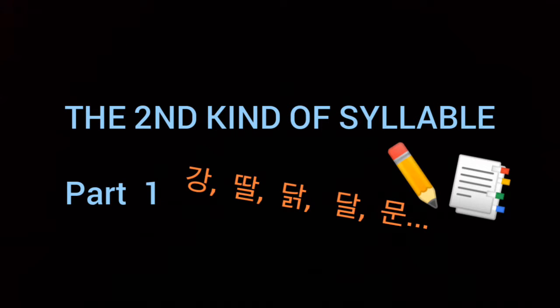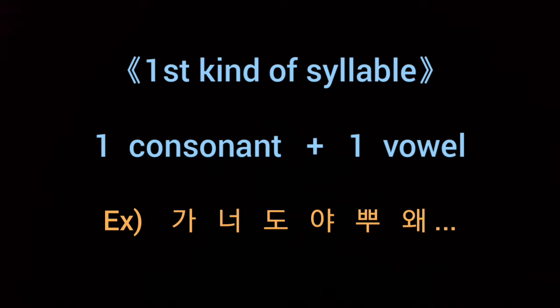Hello, I'm Alex. Today, we're gonna talk about the second kind of syllable. As I said before, there are two kinds of syllables in Korean. The first one consists of one consonant and one vowel, and I call it the first kind of syllable.